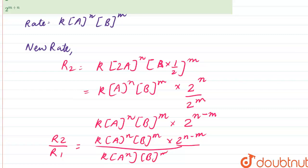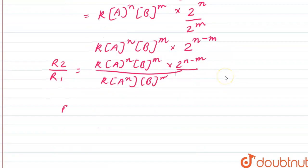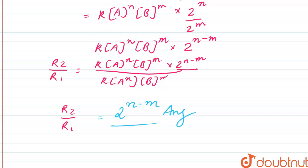This is the initial and R2 is the final rate. So our answer should be R2 by R1. R2 by R1 has a value equal to 2 raised to power N minus M, and this is our answer.